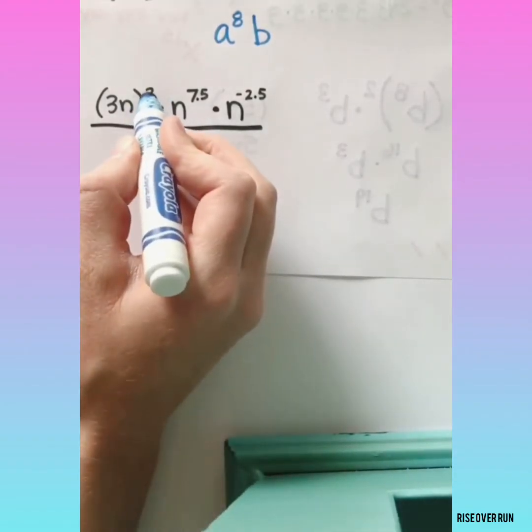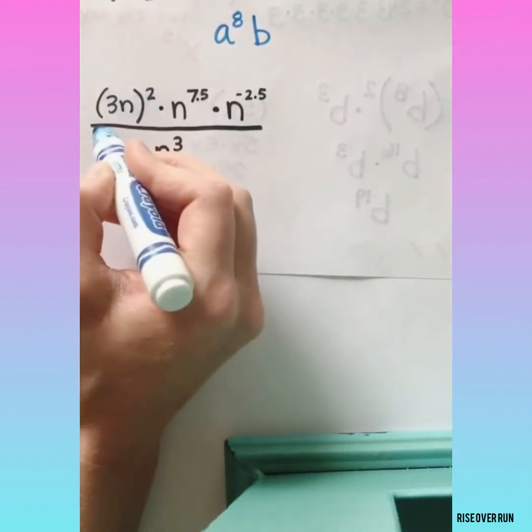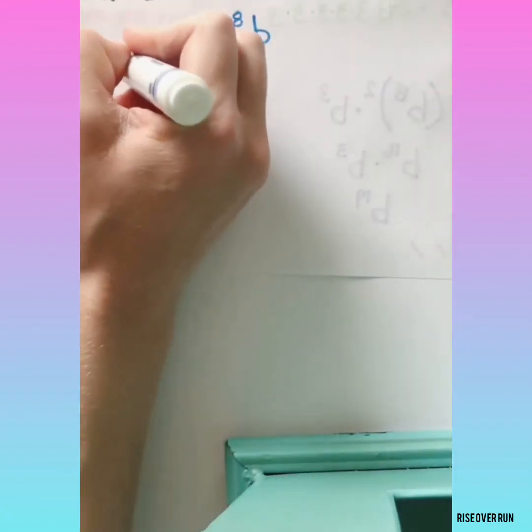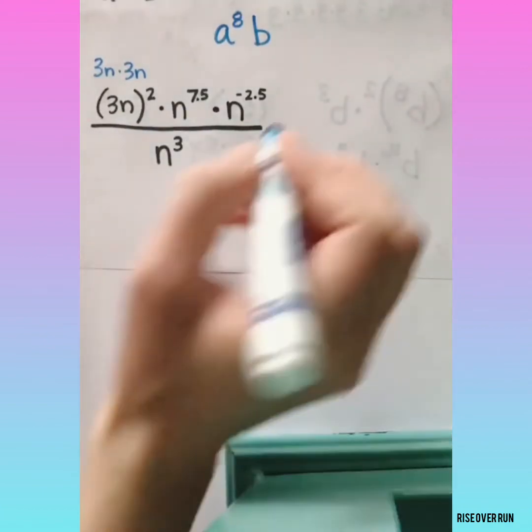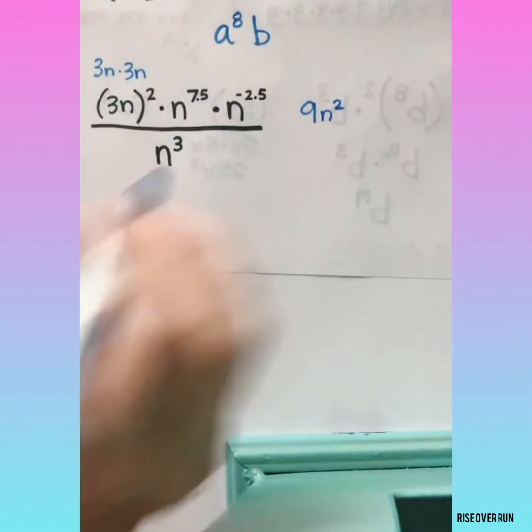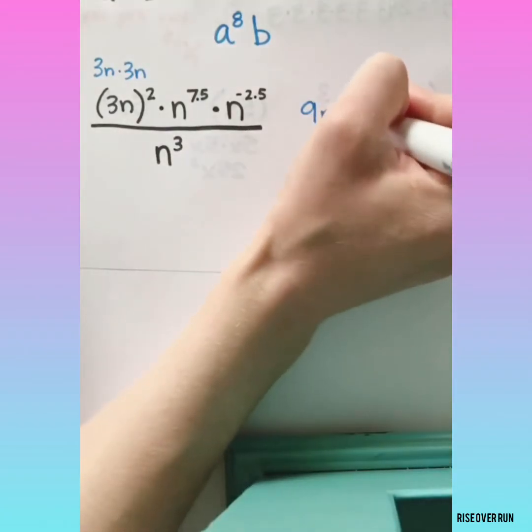It looks really complicated, but we can clean it up with laws of exponents. First, remember that this squared outside the parentheses applies to both the 3 and the n. So that means 3n times 3n. So first we have a 9n squared.